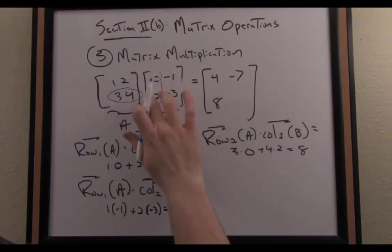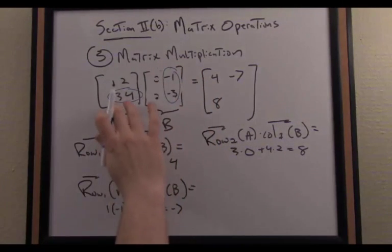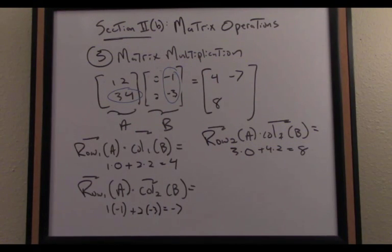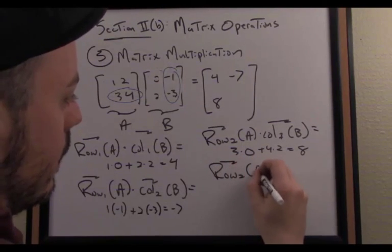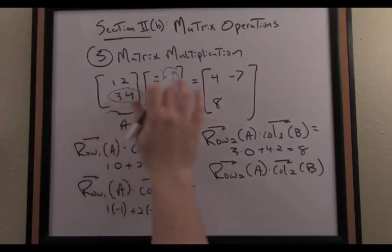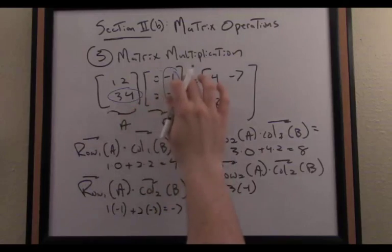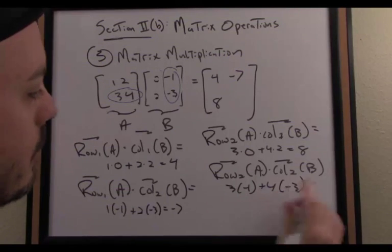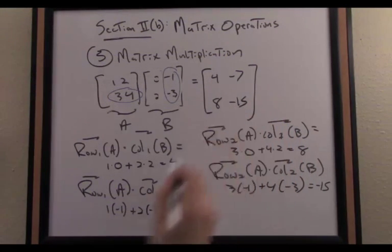Lastly, to finish this up, which will form our general pattern for matrix multiplication, I'm going to dot the second row of A with the second column of B. I have row 2 of A as a vector dotted with column 2 of B as a vector. I have 3 times negative 1 plus 4 times negative 3, so I have negative 3 minus 12 results in negative 15.